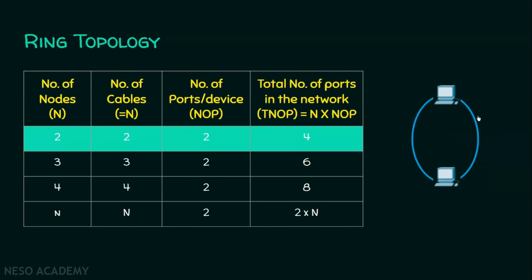In a ring topology, if there are two nodes, then we need two cables — cable one and cable two. And each node needs two ports: port one and port two. Similarly, this node also should have two ports — port one and port two. So a total of four ports are required. Each node must have two ports.